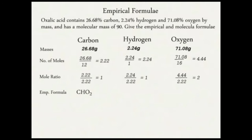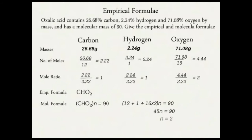For the molecular formula, the relative molecular mass is 90. We set up: (CHO₂) × n = 90. That gives (12 + 1 + 16×2) × n = 90, so 45n = 90, and n = 2. Therefore the molecular formula is C₂H₂O₄.